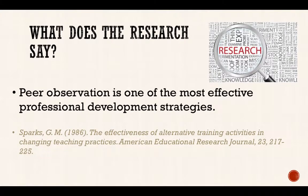What does the literature have to say about peer observation? Peer observation has been demonstrated by Spark to be the most effective way to engage in professional development. He conducted a study where a group of junior high teachers received three different types of professional development. All three attended the same PD workshop. One group received no further training, one group was coached by a workshop trainer, and one group participated in peer observation. At the end of the study, they determined that the group that received peer observation changed their practice and improved their teaching more than the other two groups.